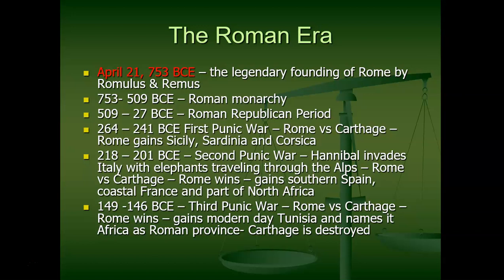Rome fights against its first big rival, the Carthaginians — a North African tribe in modern-day Tunisia that was actually a colony of the Phoenicians, the people who spread the alphabet. Hence, 'Punic' comes from the word Phoenician. The Romans fight three big wars against them — like ancient World War I, II, and III — because so many different places were involved. The Romans win each war, though none of them easily.